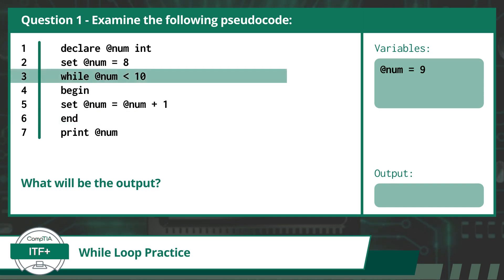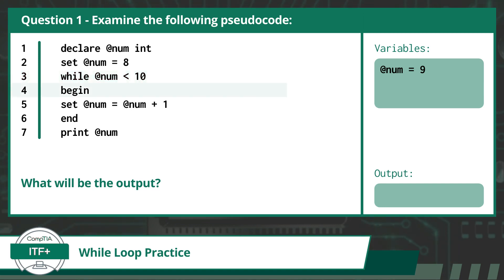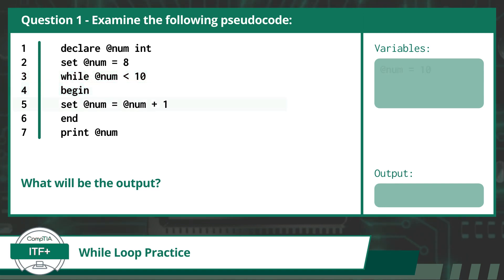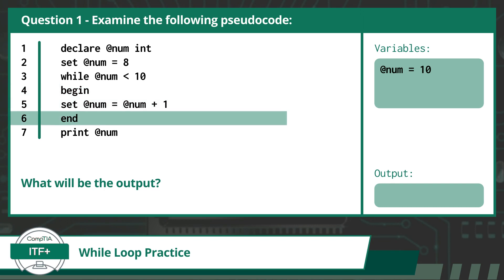Now we head back up to line 3 and start the while loop all over again. This time we perform a re-evaluation and check if @num is still less than 10. Since the value of @num, which is currently 9, is less than 10, we will execute the code statements within the loop again. We see the word begin, which opens our looped code. Then line 5 will increment @num by 1 again, setting its value to 10. This is followed by the word end, which closes our looped code.